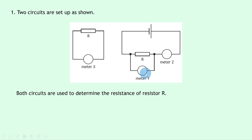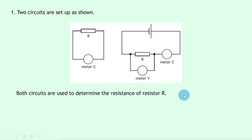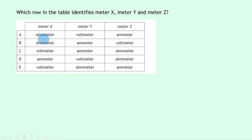Meter Y has got to be something in parallel with the resistor, and remember we connect voltmeters in parallel with the component. So that's going to be the voltmeter, and that leaves meter Z being an ammeter because an ammeter is connected in series with a component. Through Ohm's law V = IR, if you know the voltage across the resistor and the current through it, you can work out resistance. So in order X, Y and Z we have ohmmeter, voltmeter and ammeter — answer A.